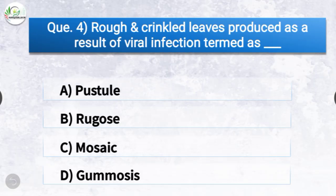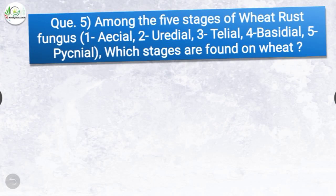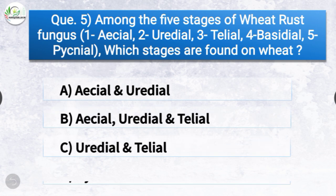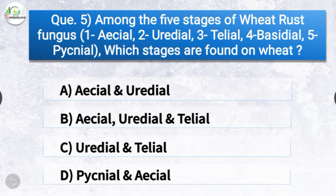Question number four: Rough and crinkled leaves produced as a result of viral infection is termed as dash. The options are pustules, rugose, mosaic, or gummosis. The correct answer is option B, rugose. Rough and crinkled leaves produced as a result of viral infection is termed as rugose.